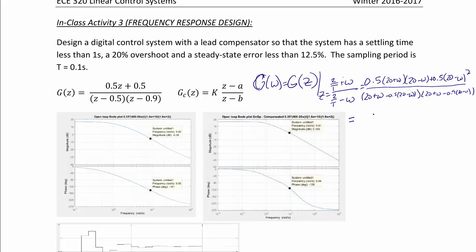That all simplifies to 400 minus 20 omega divided by 1 plus 1.5 omega plus 10 times 1.9 omega plus 2. Recall that we've already substituted into this expression T is equal to 0.1.